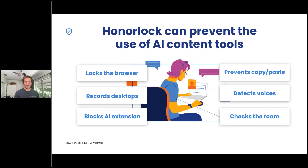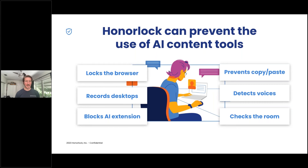Over 70% of the human-verified violations that Honorlock discovers are tied to mobile phone use — it is by far the number one method a student might look to utilize for any type of academic dishonesty. Having tools in place to prevent that is really vital.